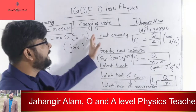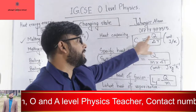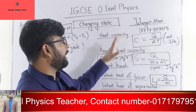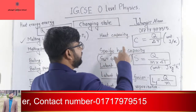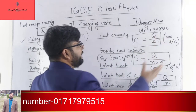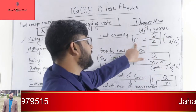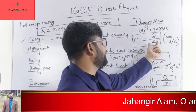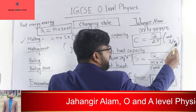Now, heat capacity. Heat capacity is the amount of heat energy required to raise the temperature by one Kelvin, and is denoted by C. The formula is: C equals Q divided by ΔT, where Q is the amount of heat energy required and ΔT is the change in temperature. The unit is Joule per Kelvin.